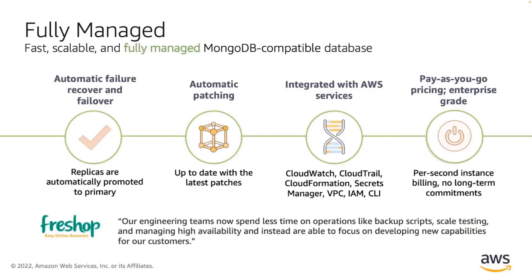Next, we'll go into the service overview. Amazon DocumentDB is a fully managed document database service with automatic recovery and failure handling. Replicas are automatically promoted to primary to give you a self-healing service. We also provide automatic patching so you can stay up to date with the latest patches. Maintenance windows happen every few months, and you can choose the 30-minute window. We have broad integration into existing AWS services, such as CloudWatch, CloudTrail, CloudFormation, Secrets Manager, VPC, IAM, and CLI.